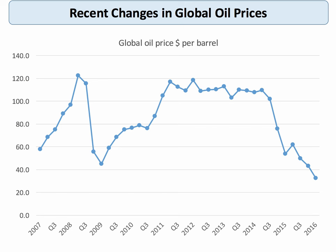Another thing the Bank looks at is oil prices — both domestic and external indicators. Clearly in the last couple of years the big story has been the fall in the price of oil, falling from well over $100 per barrel down to less than $40 at one stage. The price of oil is now rising again, heading up towards $50, so some of the impact of falling oil prices will start to reverse and possibly bring inflation up later in the year.